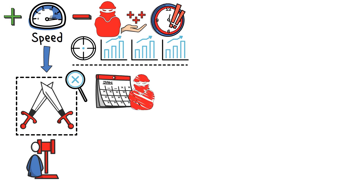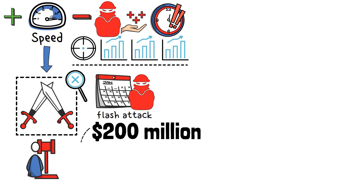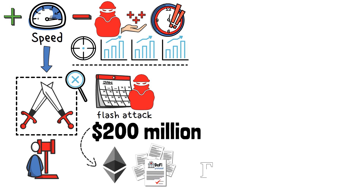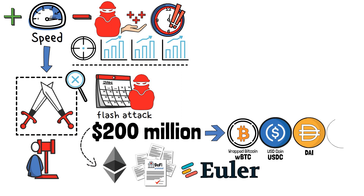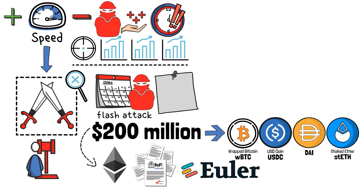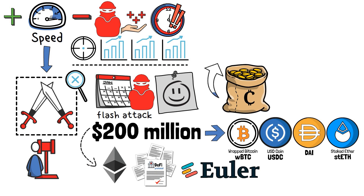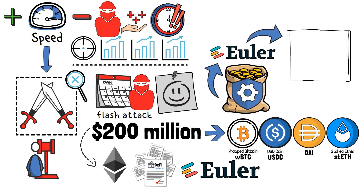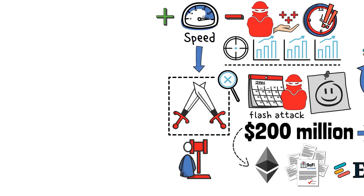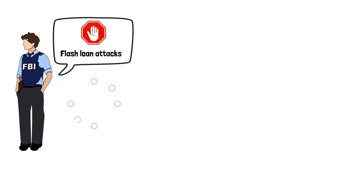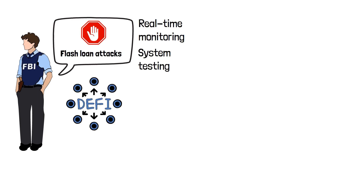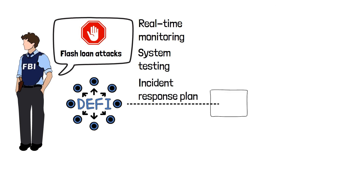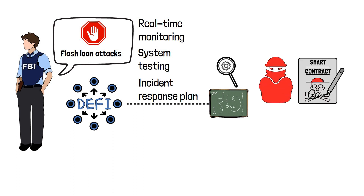In one recent instance, malicious actors used a flash attack to steal almost $200 million from the Ethereum-based DeFi protocol Euler Finance, taking funds in the form of wrapped Bitcoin, USD Coin, DAI, and staked Ether. Notably, the hacker eventually returned almost all the funds. To avoid flash loan attacks, the FBI recommends that DeFi platforms perform real-time monitoring, system testing, and have a prepared incident response plan to execute whenever suspicious activity, smart contract exploitation, or other vulnerabilities are detected.